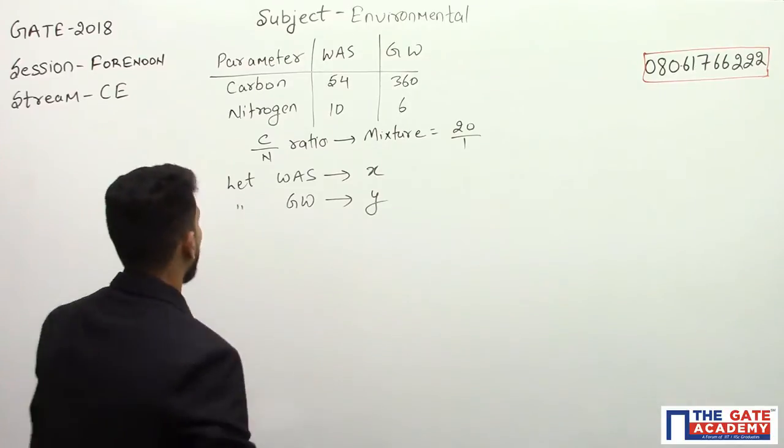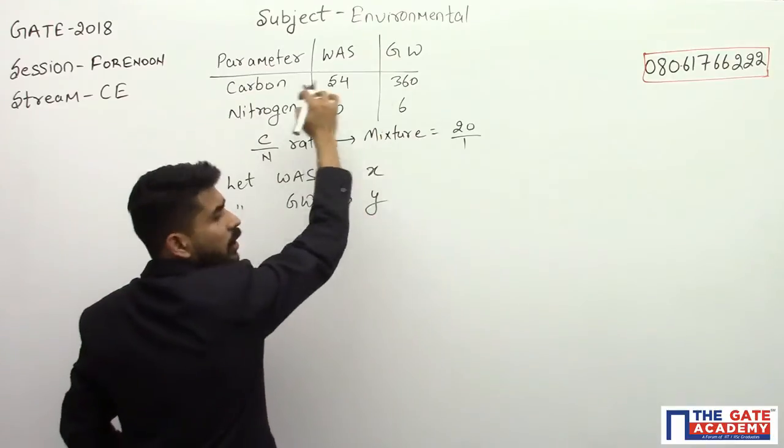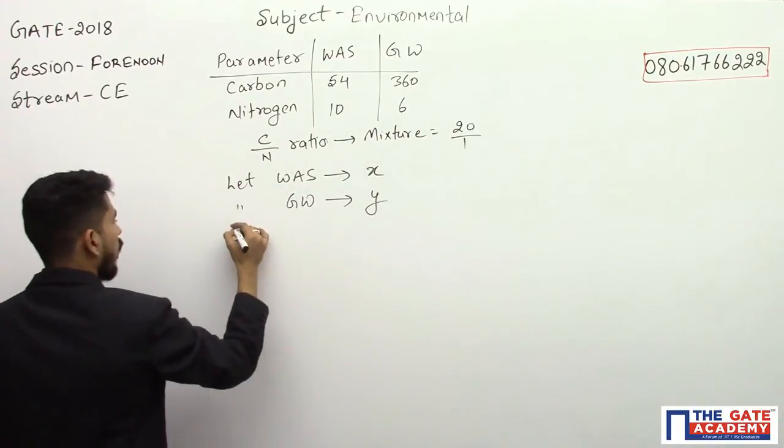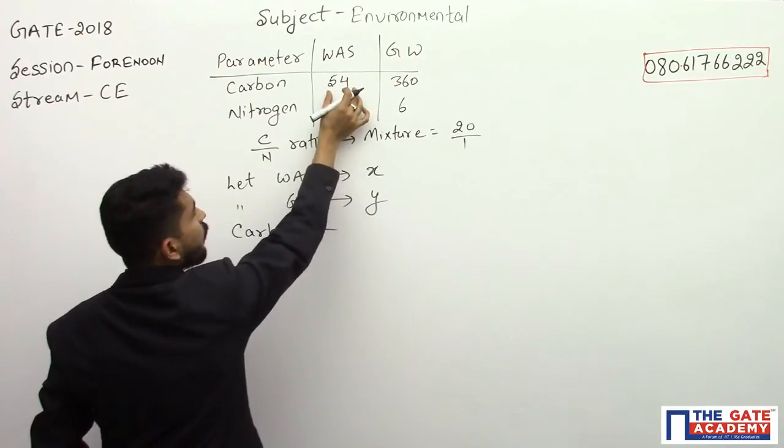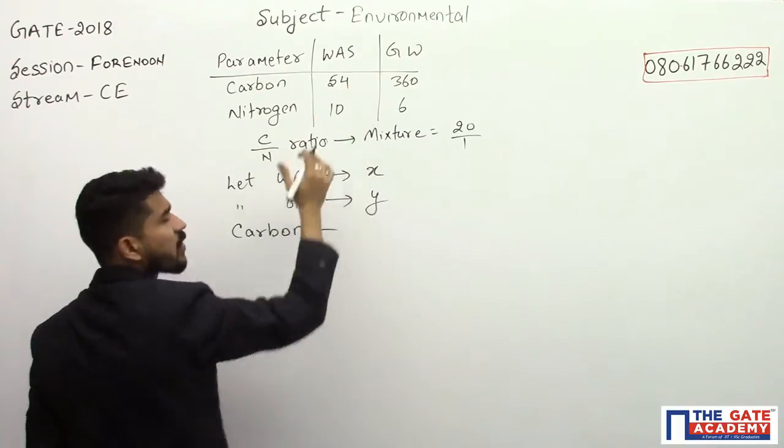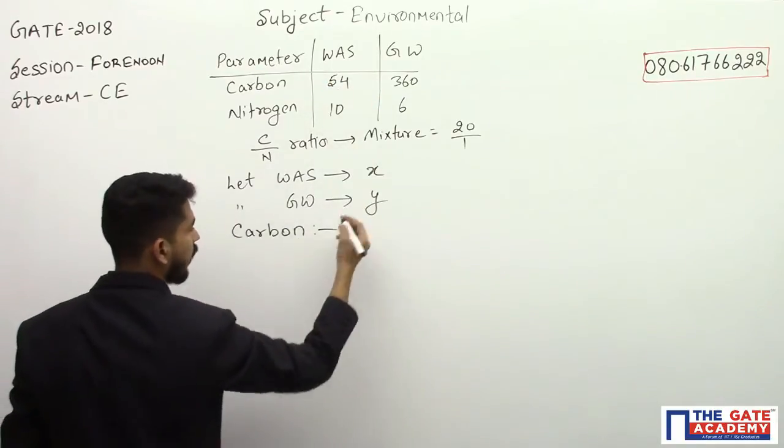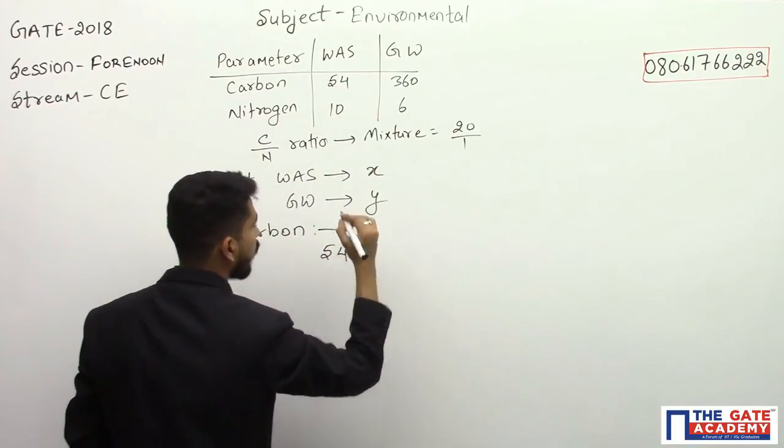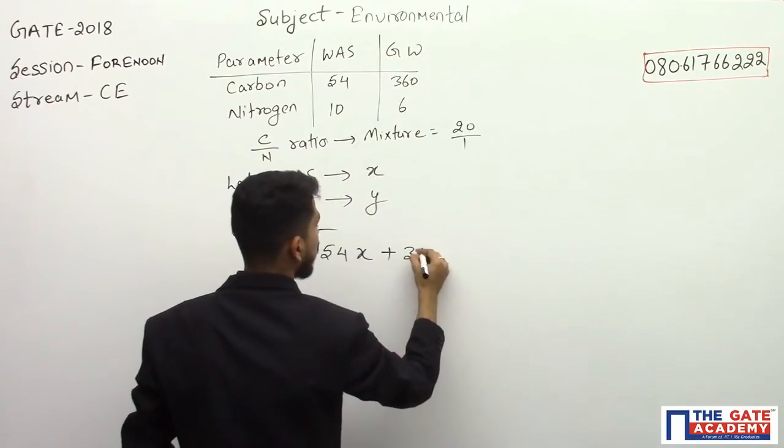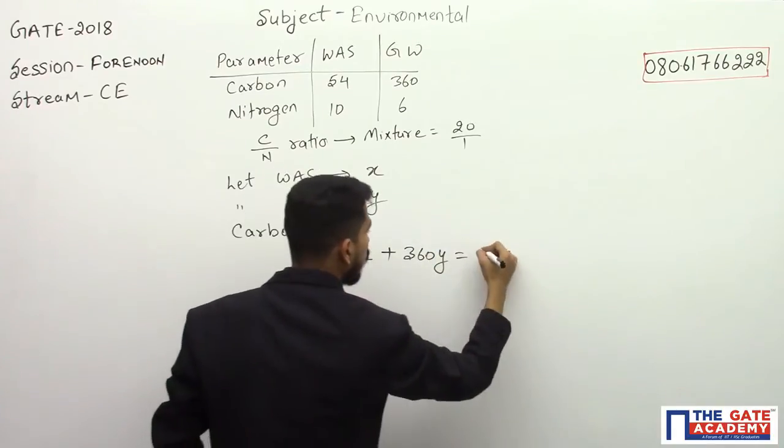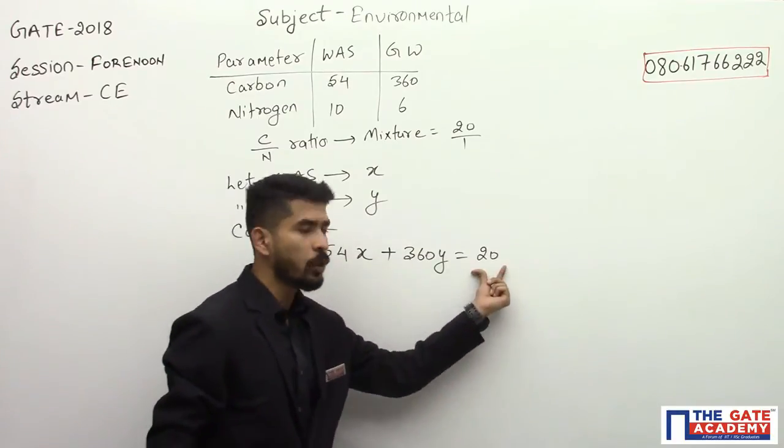If we take WAS as X and GW as Y, for the total carbon content I am writing an equation. For carbon, 54 parts is carbon and 10 parts is nitrogen in WAS. So I can write 54 parts of X plus 360 parts of Y equals 20. We are mixing these two and the total carbon content equals 20 units, so we have one equation.